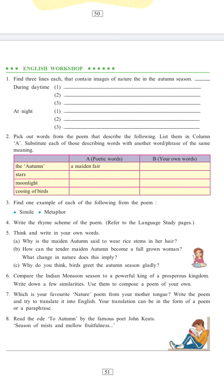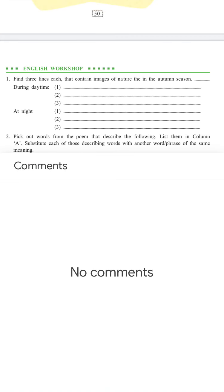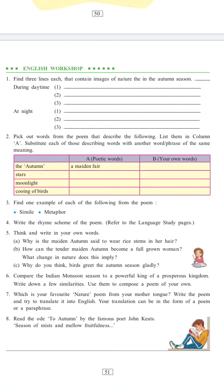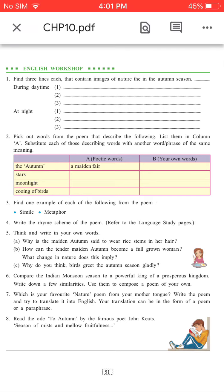Your translation can be in the form of poem or paraphrase. Question number 8: Read the ode to Autumn by the famous poet John Keats, season of mists and mellow fruitfulness. This poem has to be read. Thank you.